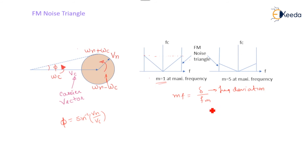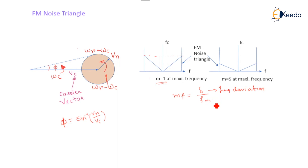The effect of noise is observed more at higher modulating frequencies compared to lower ones. When the modulating frequency increases, the modulation index drops down. At lower modulating frequencies, the noise triangle effect is more visible, whereas when the modulation index MF attains its maximum value, the modulating frequency is lower — so less noise will be added to the FM wave. This is all about the FM noise triangle concept.